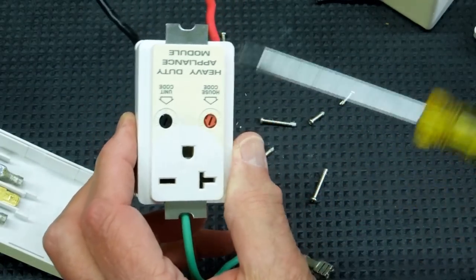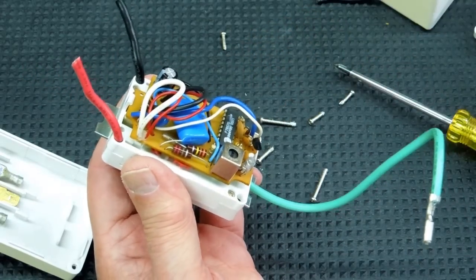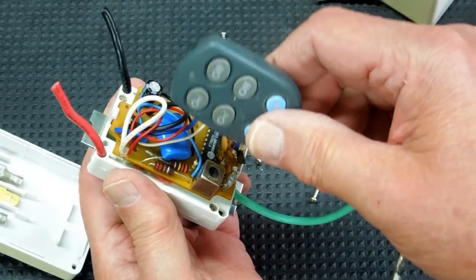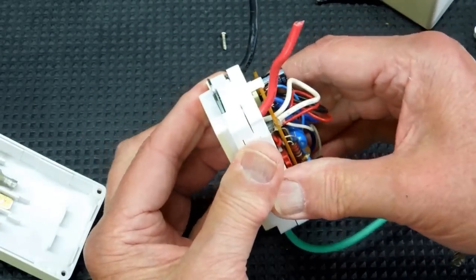And you've got these dials here that set the code for when this will go on and off in response to a code that's set on the remote. Take out a few more screws.